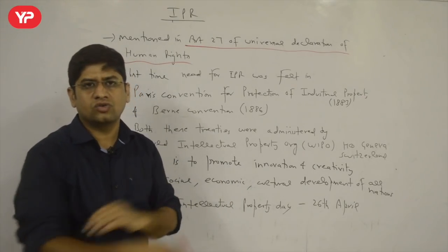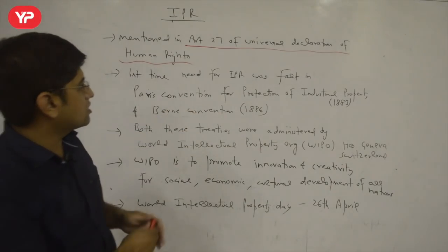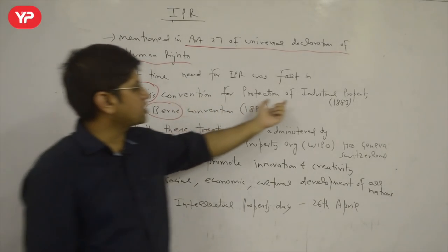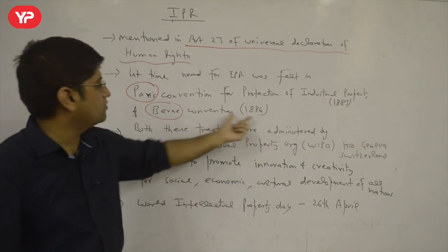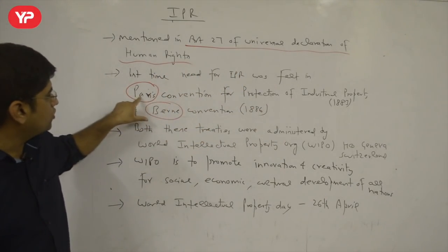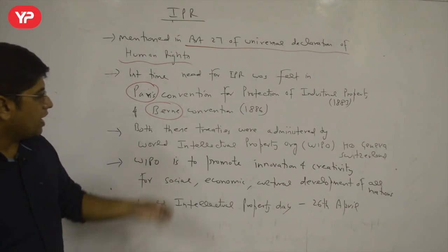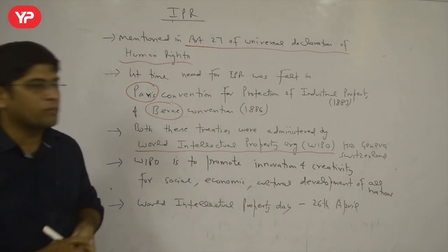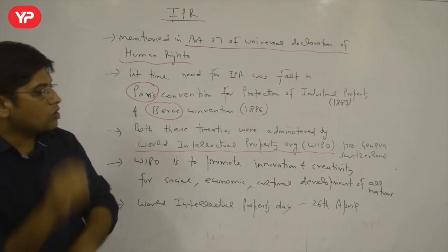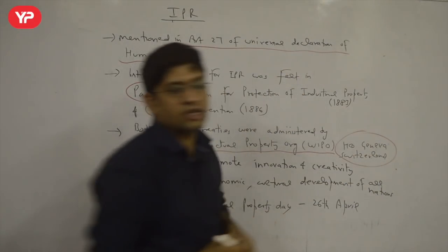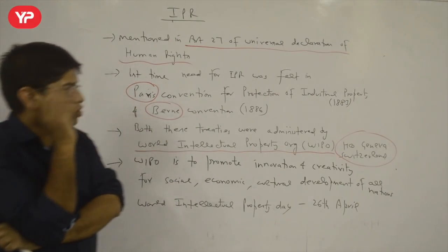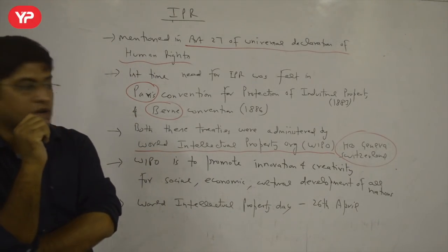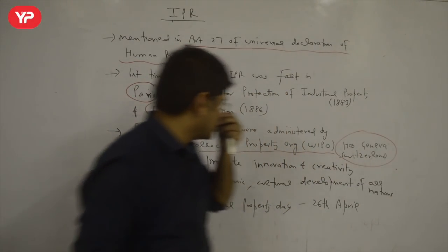The first time the need for IPR was felt was at two important international conventions: the Paris Convention for the Protection of Industrial Property in 1883, and the Bern Convention in 1886. Both these treaties were administered by a very important organization — the World Intellectual Property Organization, WIPO. WIPO's headquarters is in Geneva, Switzerland. That is the body which looks after intellectual property rights at the international level.